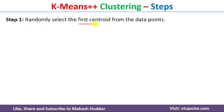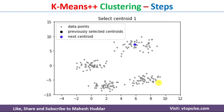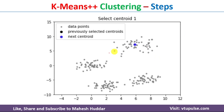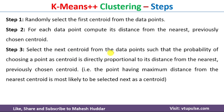The first step is to randomly select the first centroid from the given data points. When we are given the data points, we select one data point as the first centroid — I have marked the first centroid in blue. Once you select the first centroid, the next step is to calculate the distance from each of the data points to this particular centroid.